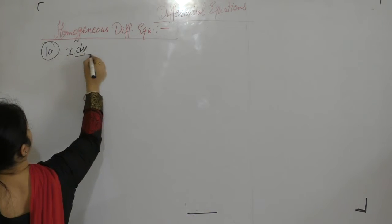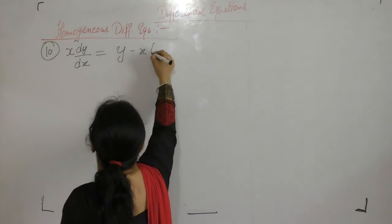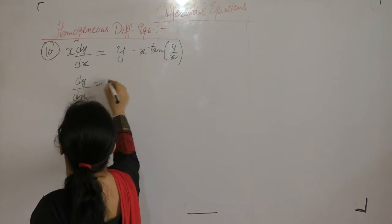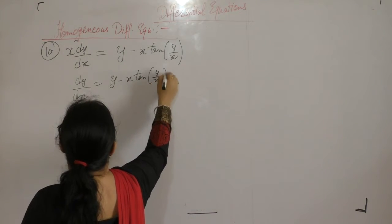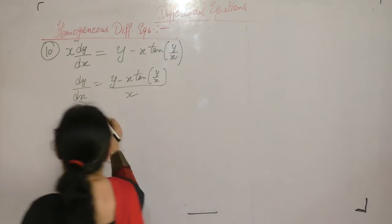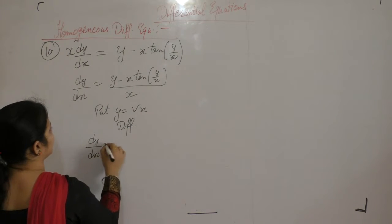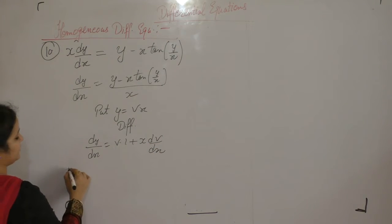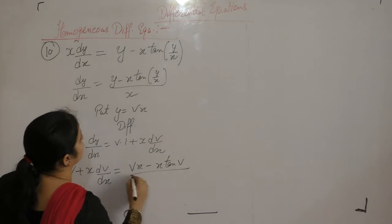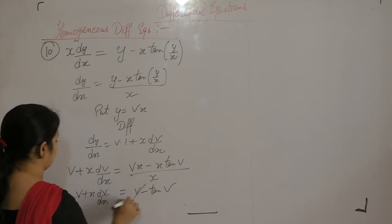Question number 10: Solve x dy upon dx equals y minus x tan(y/x). This is a homogeneous differential equation of degree 1. Substituting x with lambda x and y with lambda y leaves the equation unchanged, confirming it is homogeneous. Put y equals vx, differentiate to get dy upon dx equals v plus x dv upon dx. Substituting: v cancels from both sides, leaving x dv upon dx equals negative tan v.